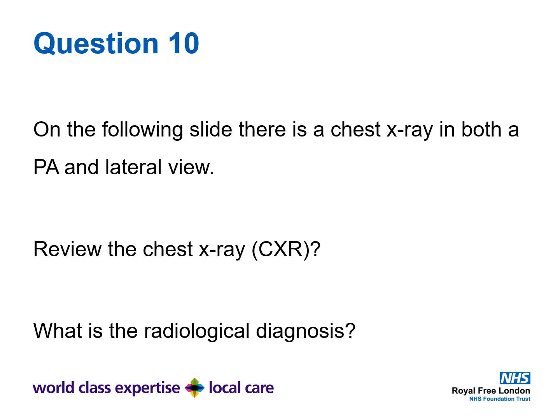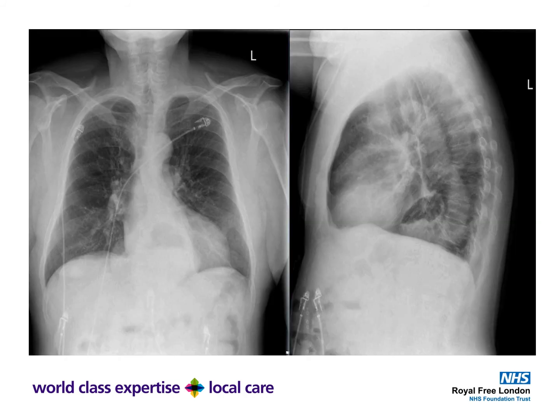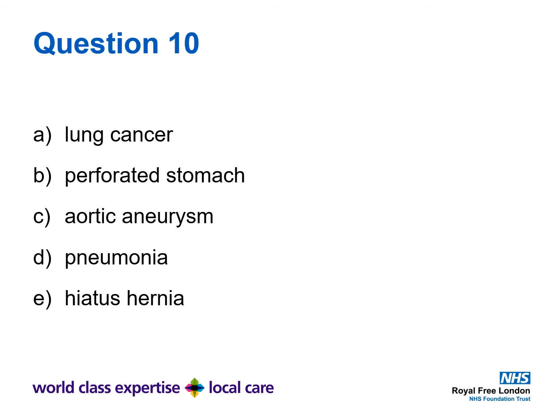Question 10. On the following slide there is a chest x-ray in both a PA (postero-anterior) view and a lateral view. Review the chest x-ray. What is the radiological diagnosis? Pause the video here until you've studied the x-ray and think you have a diagnosis. Is it A: lung cancer, B: perforated stomach, C: aortic aneurysm, D: pneumonia, or E: hiatus hernia?